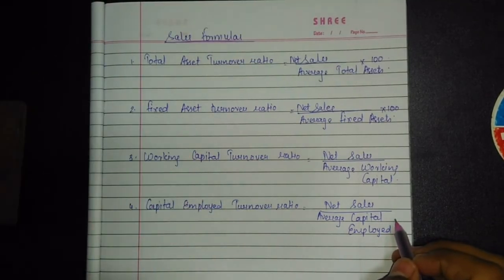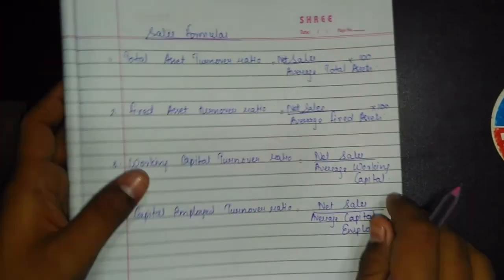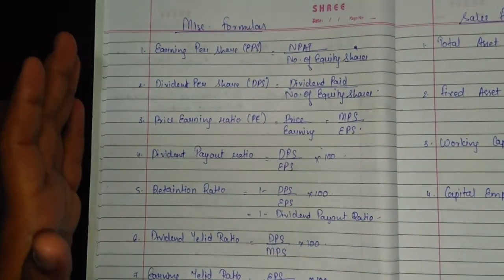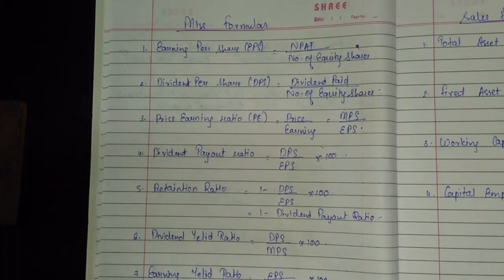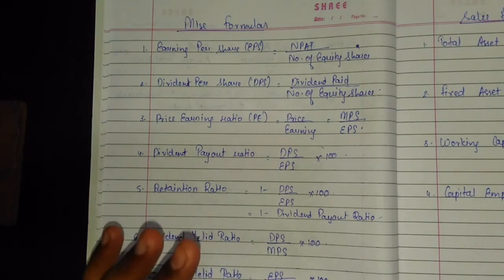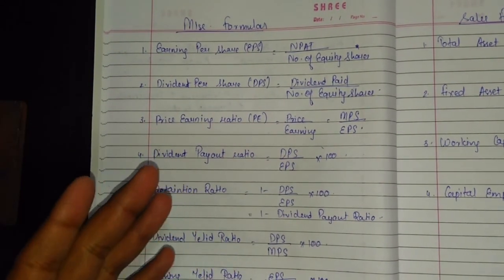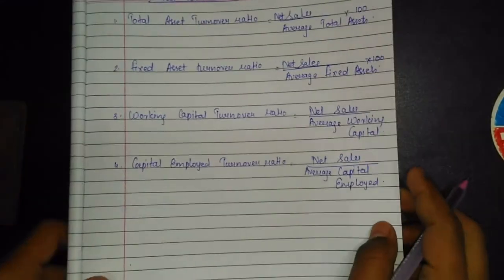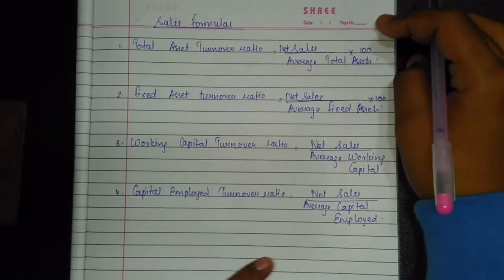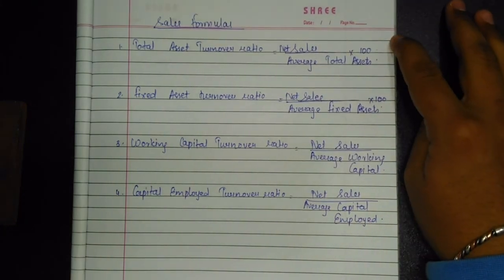All these formulas will help you find missing figures in the balance sheet, so know them properly. In the exam they may directly ask you to calculate Earnings Per Share or Dividend Per Share. Some deeper logic is not needed at the IPCC level — what needs to be known in depth has already been covered. From the next video we will be solving numerical problems.